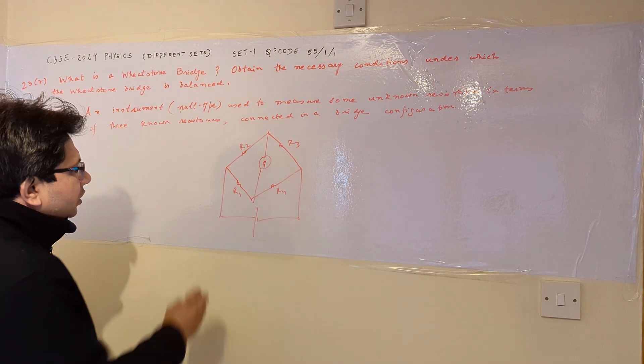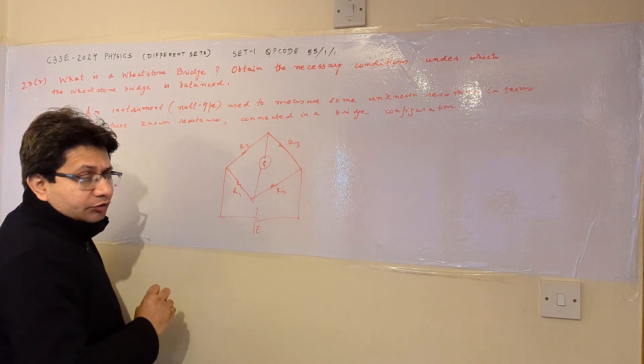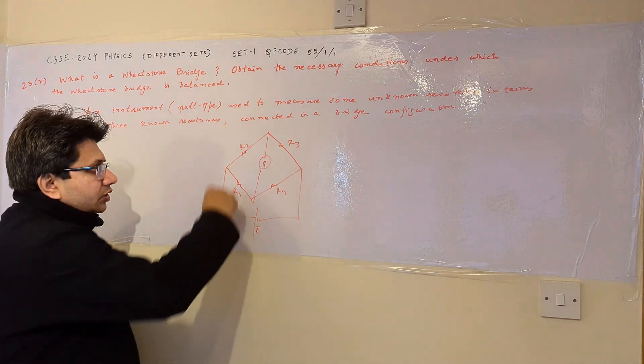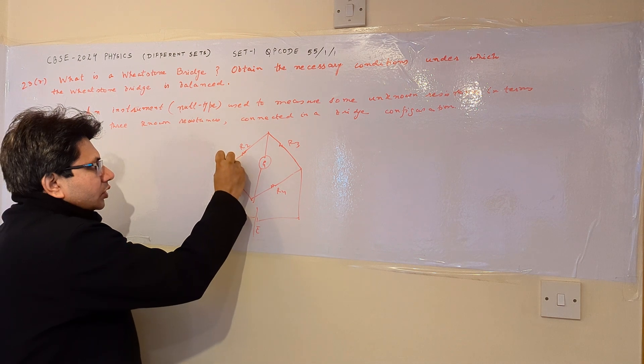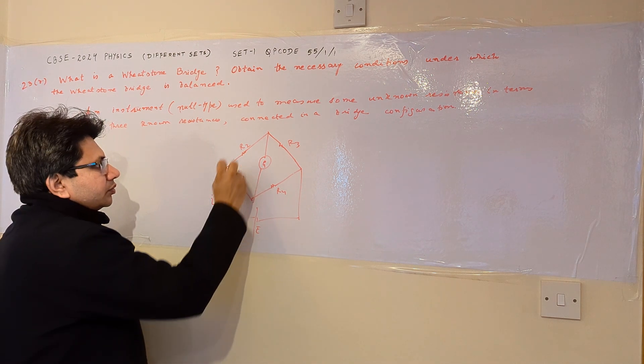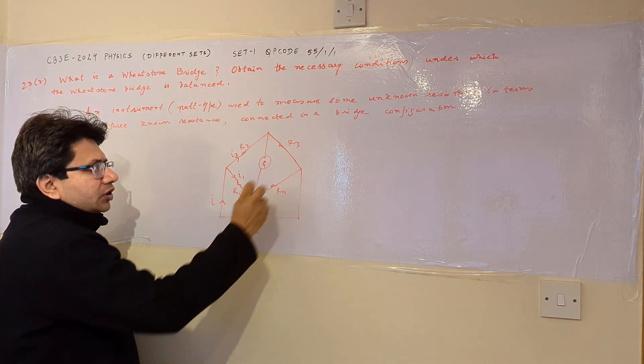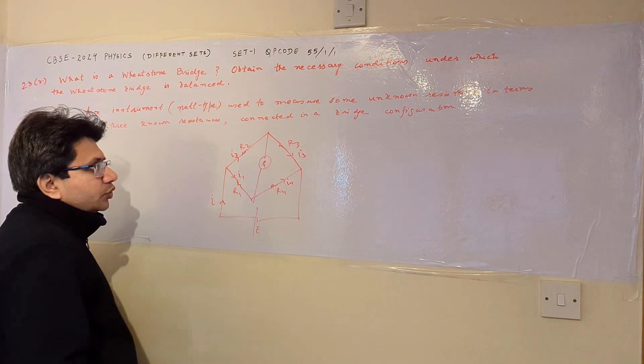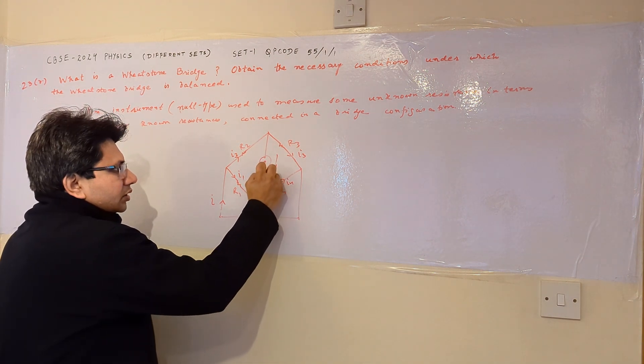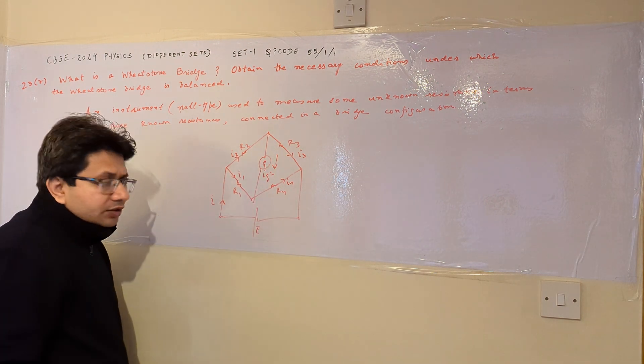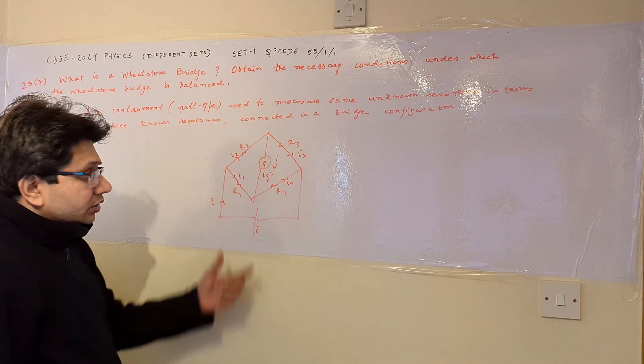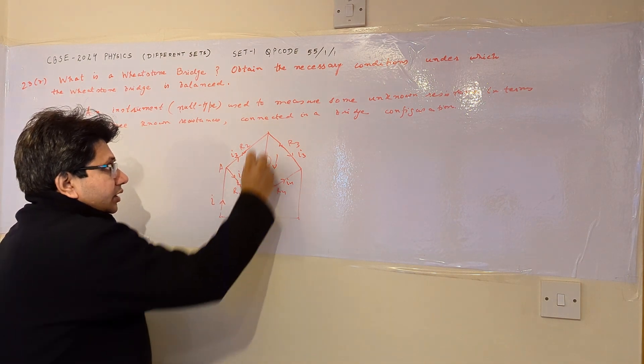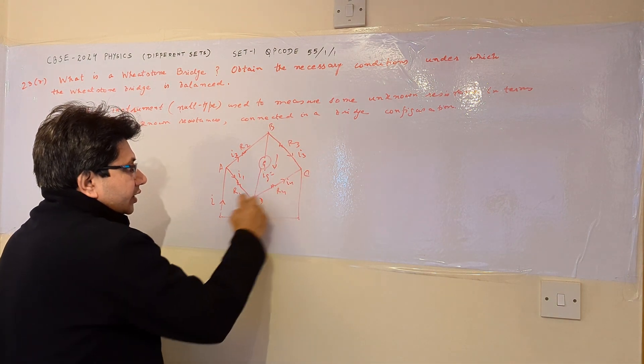So now let this battery have an emf of e, delivering a current i in this arrangement. Suppose i1 current passes here, i2 current passes here, i3 current passes through R3 and i4 current passes through i4. And ig is the galvanometer current. In the null condition, this is zero. Let us call the nodes as A, B, C, D respectively.